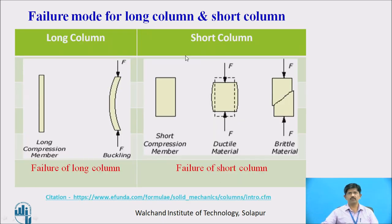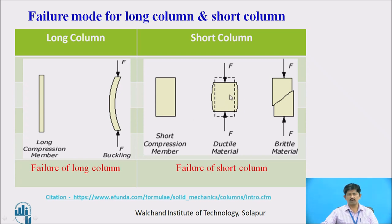You can see the failure modes for long column and short column. In the case of a long column, failure takes place by buckling — this is how it buckles. Whereas in a short column, failure takes place by crushing, and in the case of brittle material, a sudden fracture will take place.